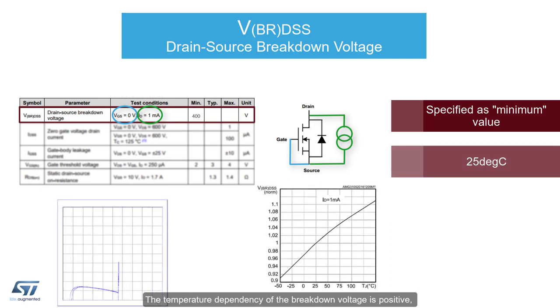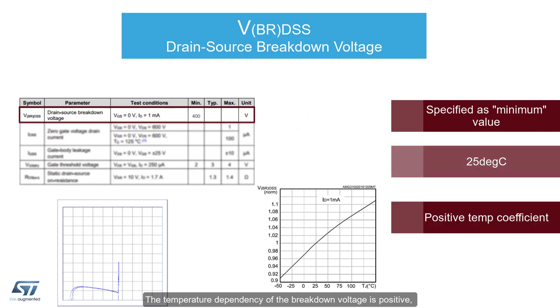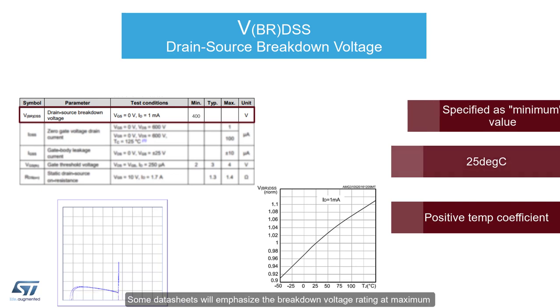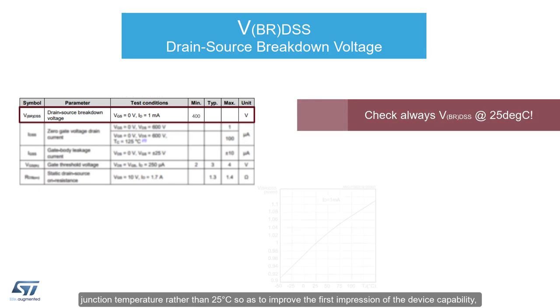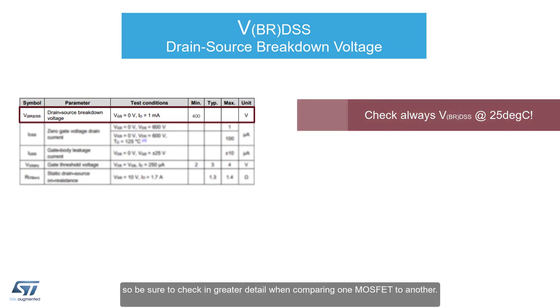The temperature dependency of the breakdown voltage is positive, so that as the junction temperature increases, so does the breakdown voltage in a linear fashion, often up to an improvement of 10 percent or more at maximum operating temperature. Some datasheets will emphasize the breakdown voltage rating at maximum junction temperature, rather than 25C, so as to improve the first impression of the device capability. So be sure to check in greater detail when comparing one MOSFET to another.